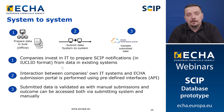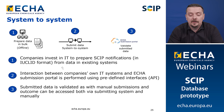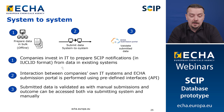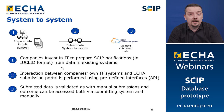Going back to the definition of the SCIP notification process in the context of system-to-system: for the data preparation part, companies will invest in an IT investment to prepare the SCIP notification in the harmonized IUCLID format from their existing IT systems. The submission of the dossier would happen through interaction between the company's own IT systems and the ECHA submission portal using predefined API interfaces. The validation of the submitted dossier would happen the same way as manual uploading, and the report and statuses can be retrieved via the interface APIs as well.